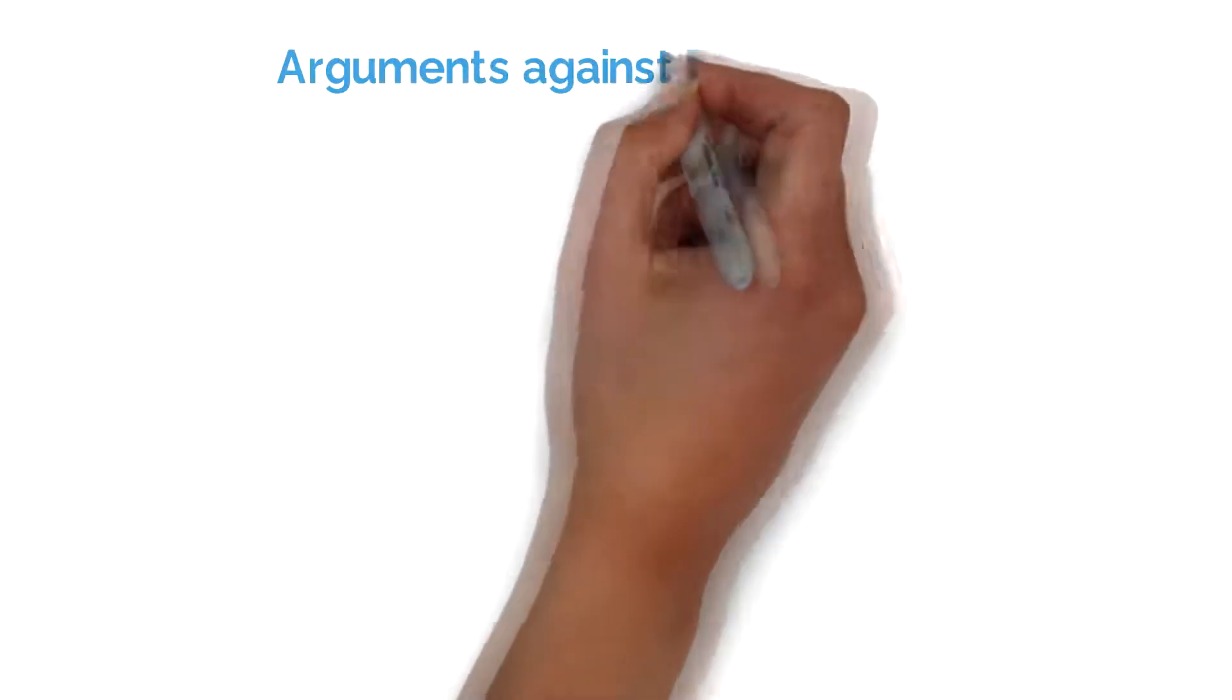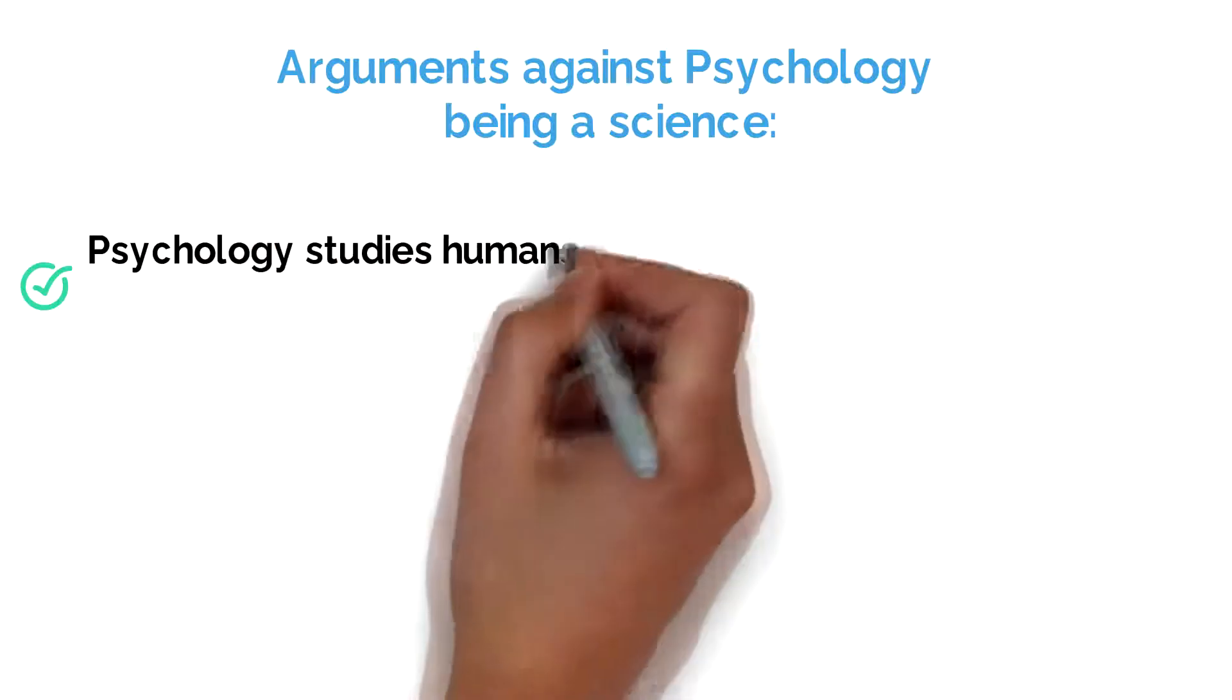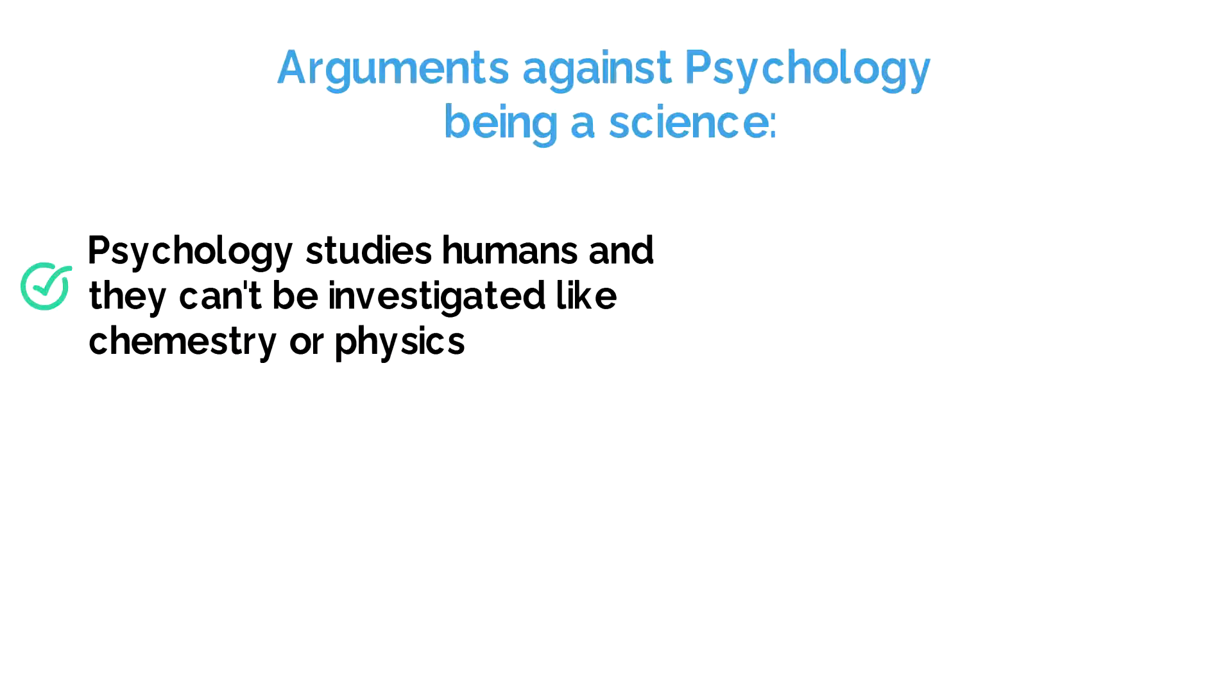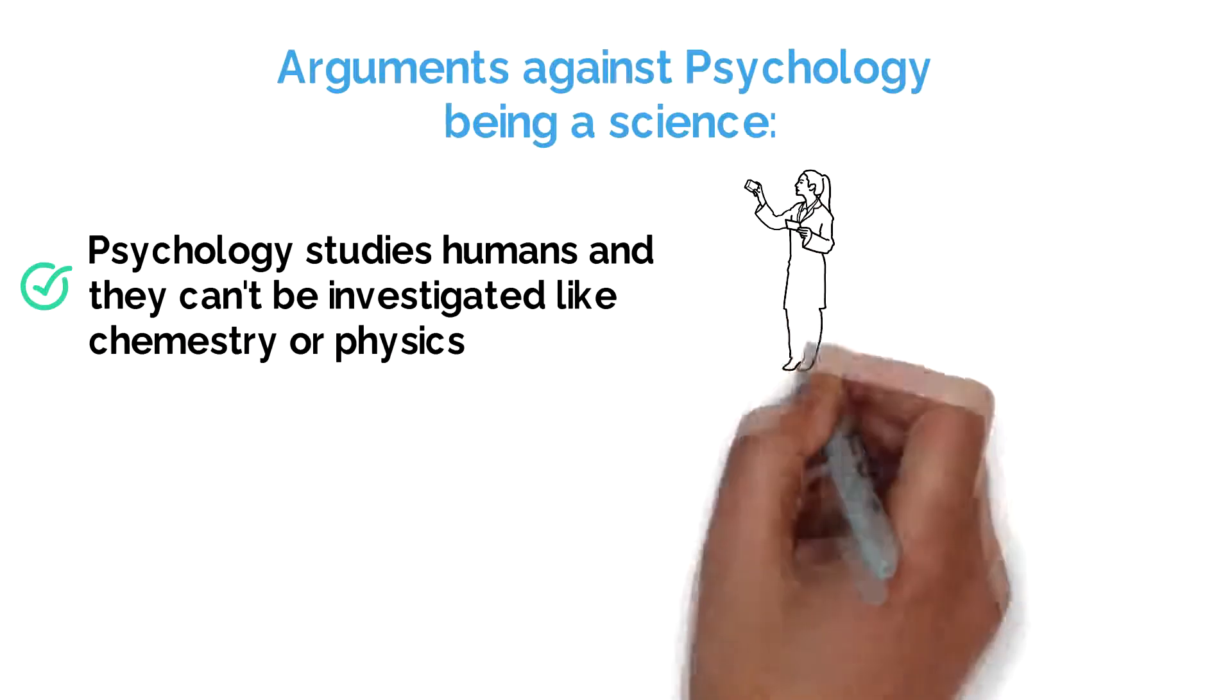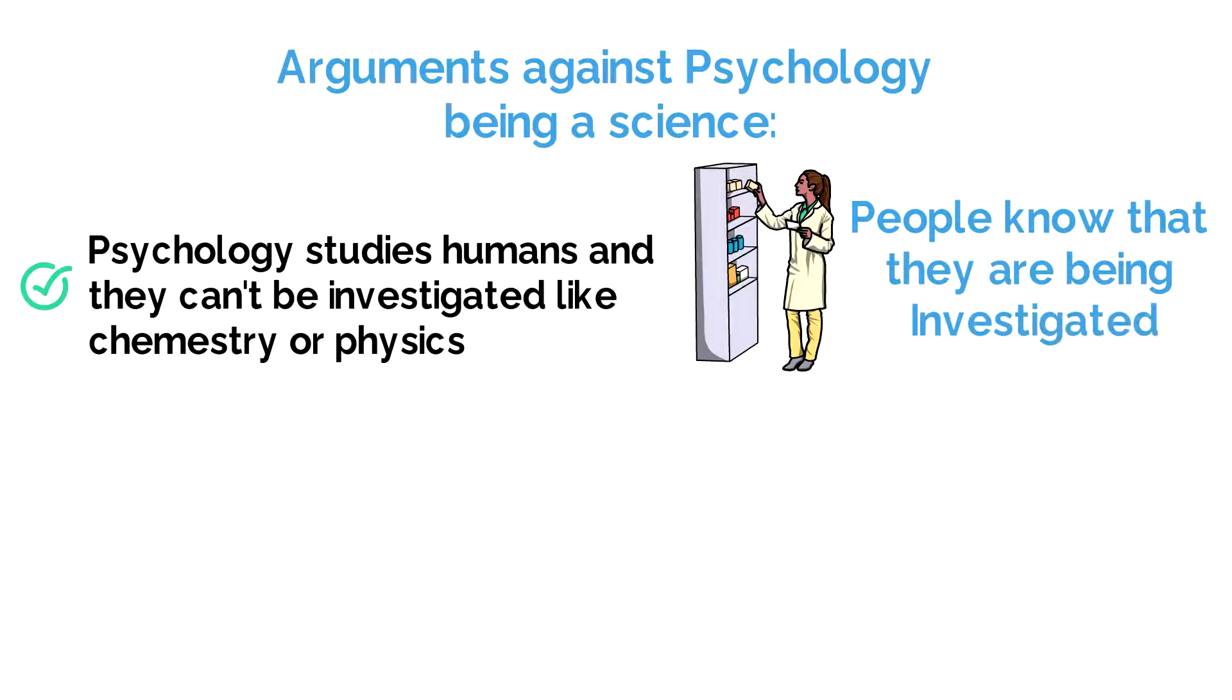Some of the arguments against psychology being a science include the following. Psychology's subject matter is humans. They can't be investigated in the same way as the subject matter of, say, chemistry or physics because people are often aware that they're being investigated and interacting with a researcher, which can alter their behaviour through demand characteristics.